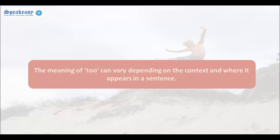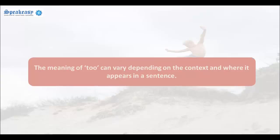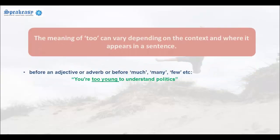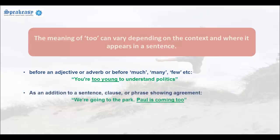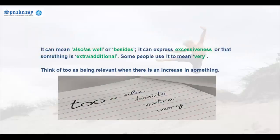The meaning of 'too' can vary depending on the context and where it appears in a sentence. The word 'too' can appear before an adjective or adverb, or before 'much', 'many', 'few', and so on — for example, 'You're too young to understand politics.' It can be used as an addition to a sentence, clause, or phrase showing agreement, and it can mean 'also', 'as well', or 'besides'. It can also express excessiveness, or that something is extra or additional. Some people use it to mean 'very'. Think of 'too' as being relevant when there is an increase in something.